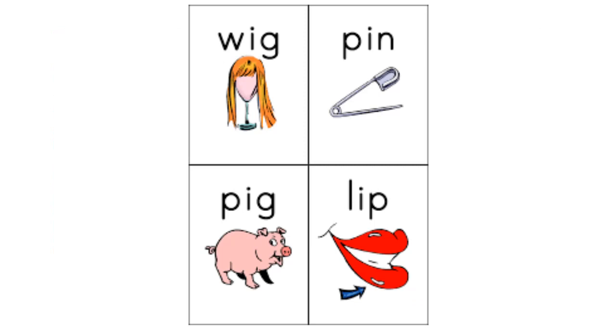Now let's take a look at more words with I. Okay, let's look at these pictures and read the words and listen to the short I sound in the middle. The first one, do you know what this is? WIG, W, I, G, WIG. Did you hear the short I sound in the middle?